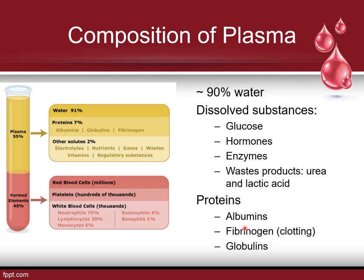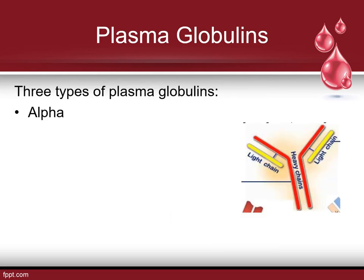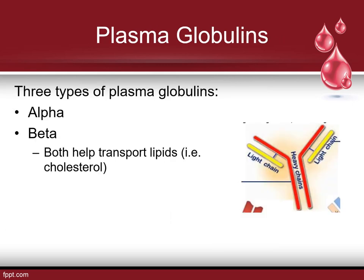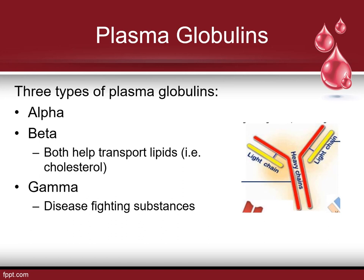This fibrinogen is what makes plasma plasma. Without it — if we didn't have the ability to clot — it would actually be referred to as serum. The different types of plasma globulins are alpha, beta (which helps transport lipids like cholesterol), and gamma, which is the disease-fighting substances also known as antibodies.